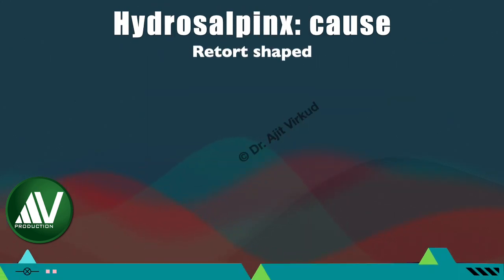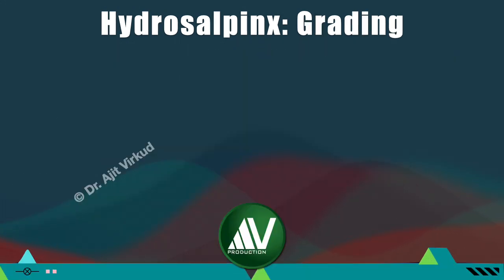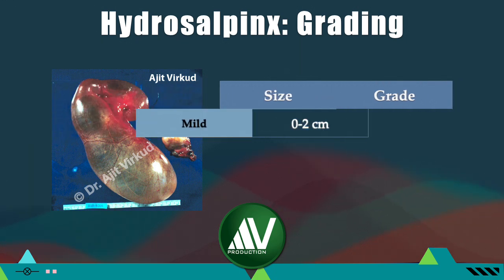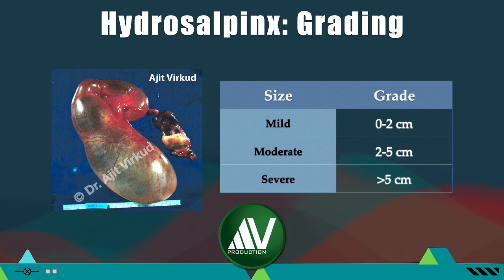Acute PID causes obstruction of the cornual and fimbrial openings of the tube along with indrawn fimbriae. The inflammatory exudate of pus, which is formed initially, gets absorbed leaving behind a clear fluid — hydrosalpinx. Grading of hydrosalpinx is based on its maximum diameter: mild is 0–2 cm, moderate is 2–5 cm, and severe is greater than 5 cm. In severe hydrosalpinx, the endosalpingeal mucosa, especially the cilia, are irreparably damaged and tuboplasty is useless.